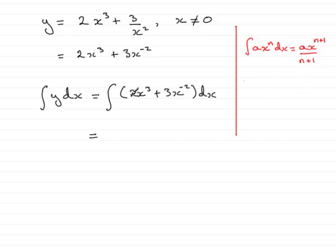So we've got those types of terms here, so all we've got to do is simply add 1 to the power, so we've got 2x to the power 4, and divide by that new power, 4.